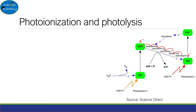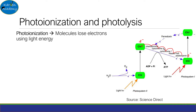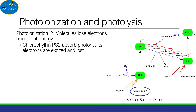Now let's understand photoionization and photolysis. This is complex, so I'll talk through this slowly. Photoionization is where molecules lose electrons using light energy. This process starts in Photosystem 2, also known as PS2 — not PlayStation 2, by the way. Photosystems are essentially chlorophyll protein complexes.